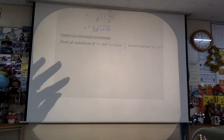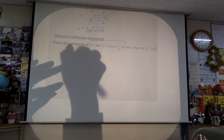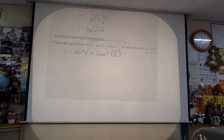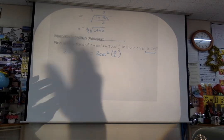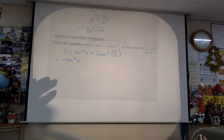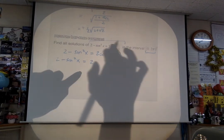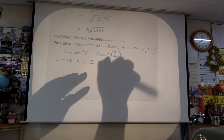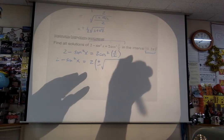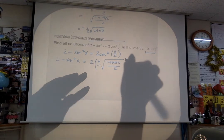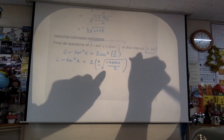Let's use another problem for half-angle formulas. Find all solutions of 2 minus sine squared x equals 2 cosine squared of x over 2, in the interval 0 to 2π. You can see where a half-angle formula will be needed. So let's try this — 2 minus sine squared x on the left, and apply the half-angle formula to the right side: plus or minus square root of 1 plus cosine x over 2.